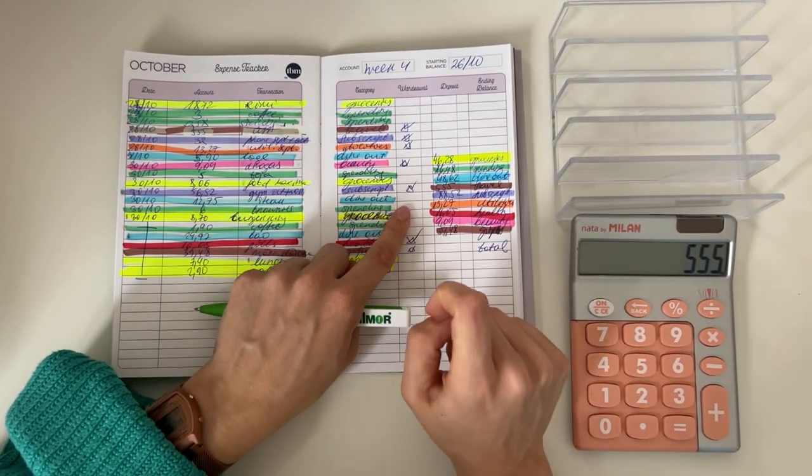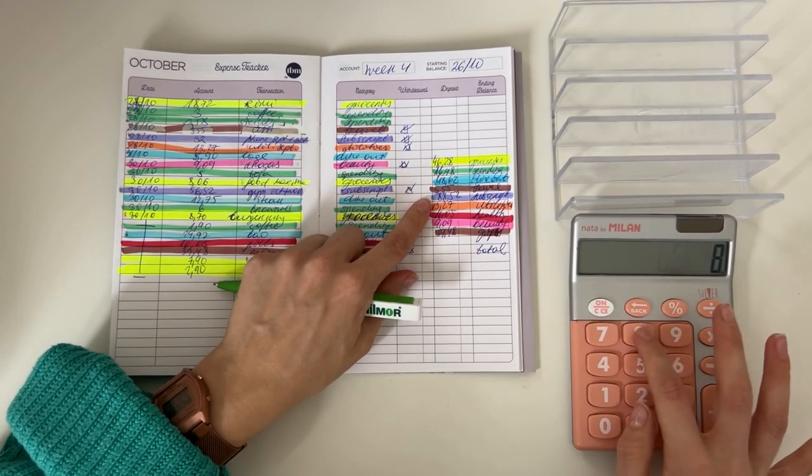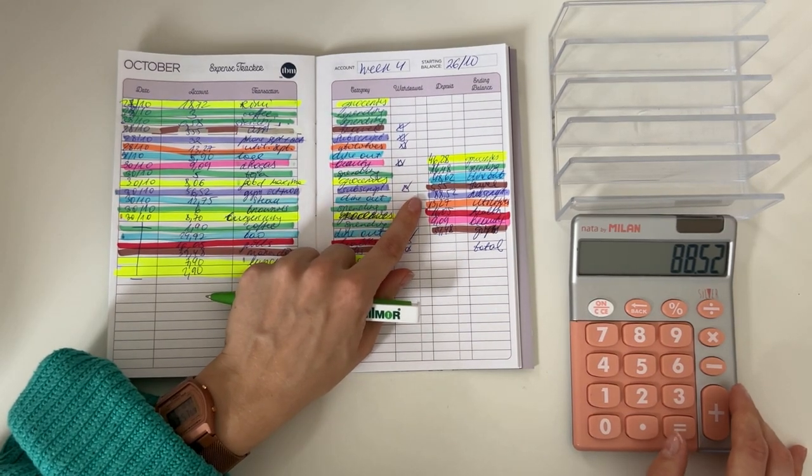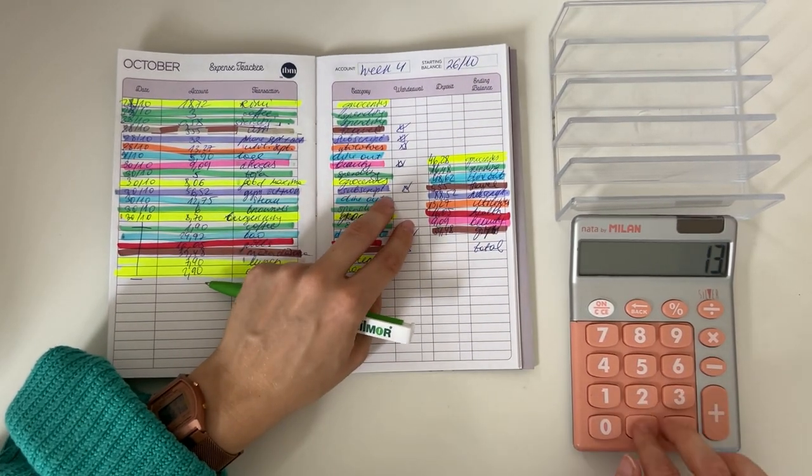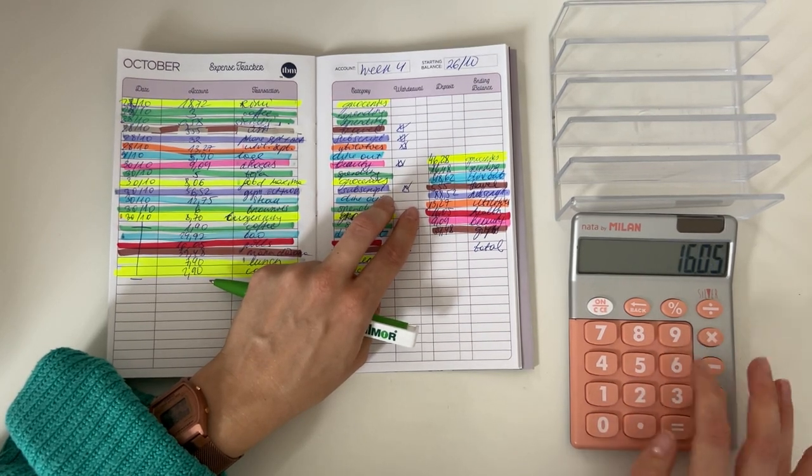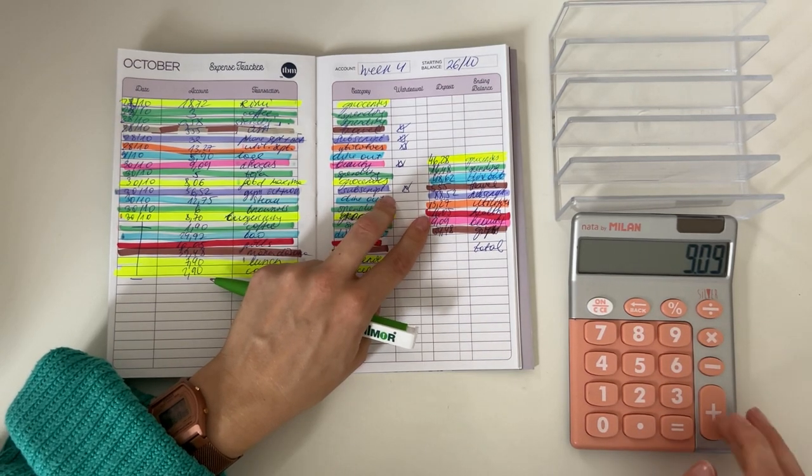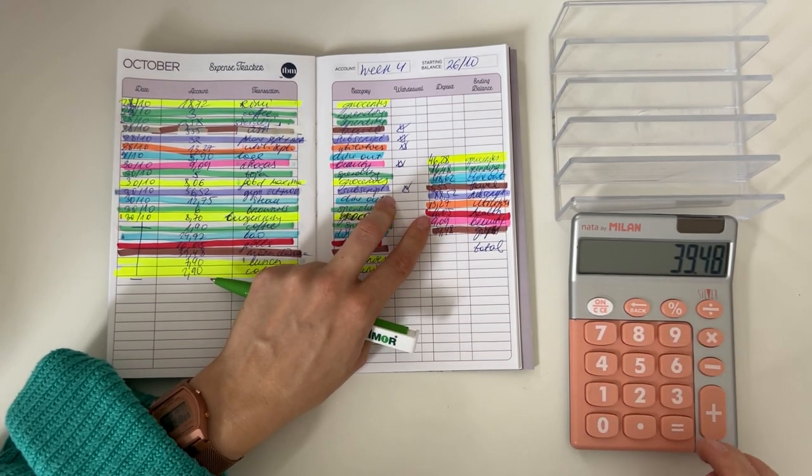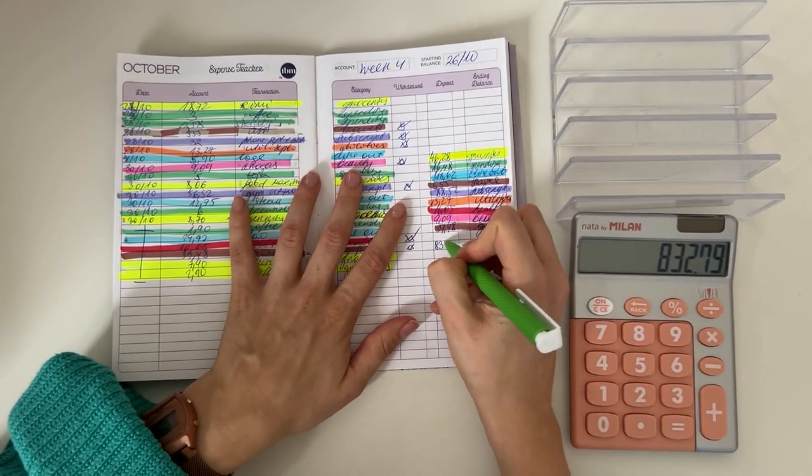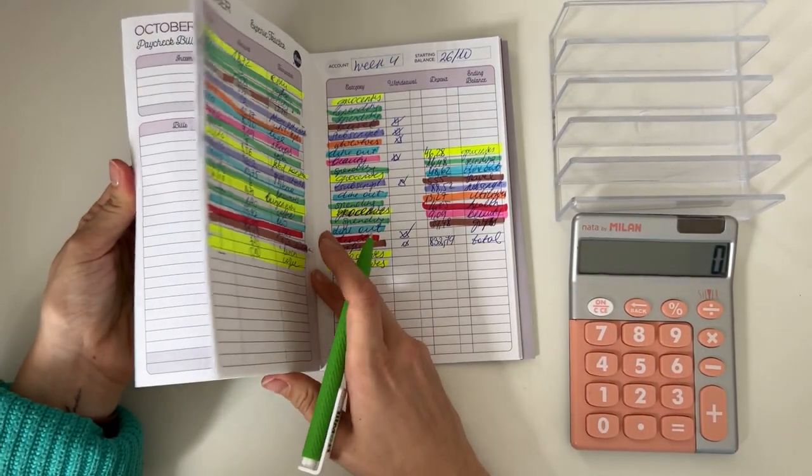88.52 was in subscriptions - I bought a gym subscription and I paid for my phone for two months. Then utilities, 13.27, 16.05 was for medicine, 9.09 was beauty - I bought a new hair oil - and 39.48 was for a birthday gift for a friend. So in total I spent 832 euros and 79 cents for the last week of October.